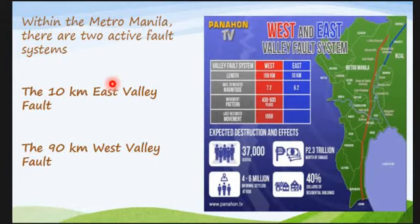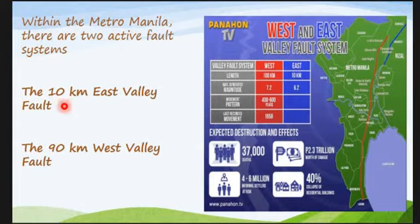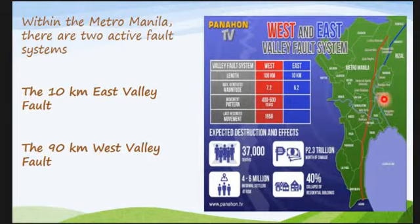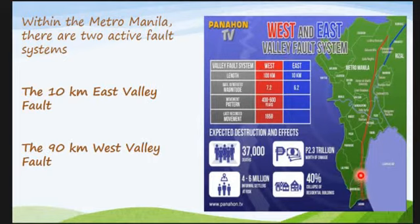Within Metro Manila, there are two active fault systems — the West Valley Fault and the East Valley Fault. The East Valley Fault is 10 kilometers long, and the West Valley Fault is 90 kilometers long, which covers NCR. This is what they refer to as 'The Big One,' because it has been a long time since it last moved.